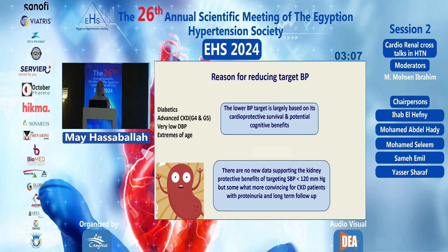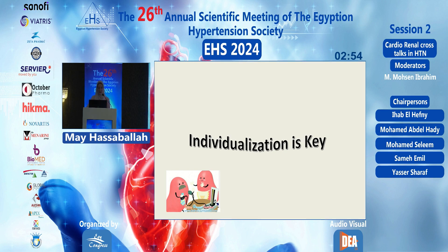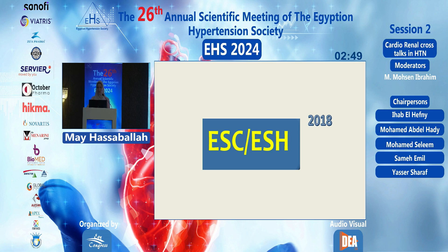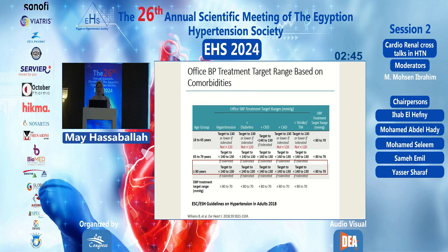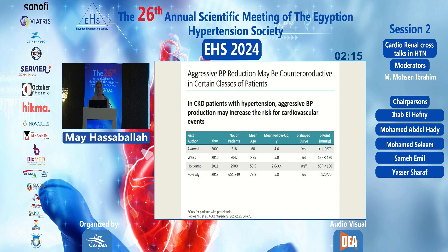Groups such as diabetics, advanced CKD stages four and five, patients with very low blood pressure, and extremes of age still need dedicated randomized controlled trials. Individualization is the key. In contrast, the European Society of Cardiology 2018 guidelines target blood pressure to 130 but not less than 120, and specifically for CKD to less than 140 to 130 if tolerated — not recommending less than 120 — because aggressive reduction may increase cardiovascular risk.